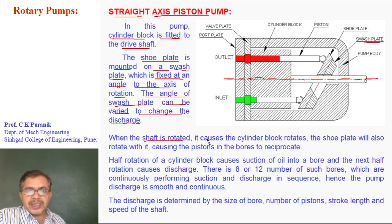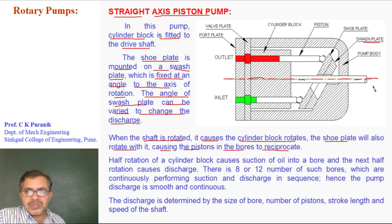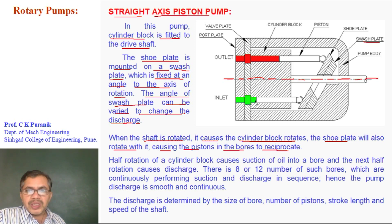When the shaft is rotated, it causes the cylinder block to rotate. The shoe plate will also rotate along with it, causing the pistons in the bores to reciprocate. All the pistons revolve about the axis, and as the shoe plate is mounted at an angle, this causes the pistons to move in and out inside the bores.